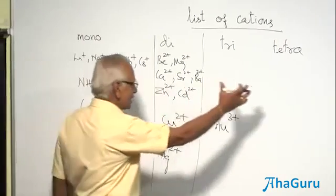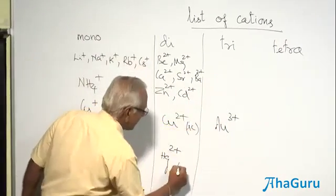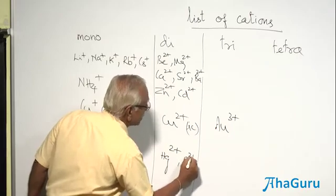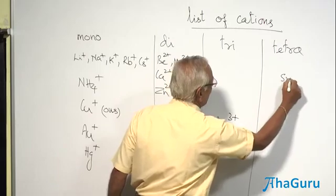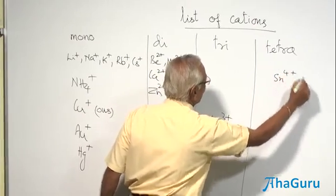Then, tin has got variable valency. Sn2+, Sn4+. This is the only tetravalent ion we are going to learn now.